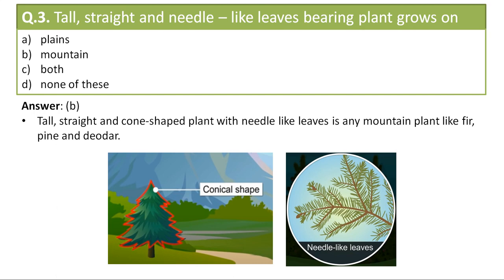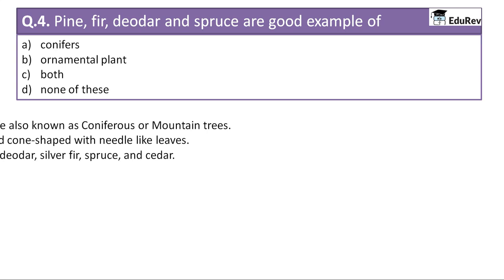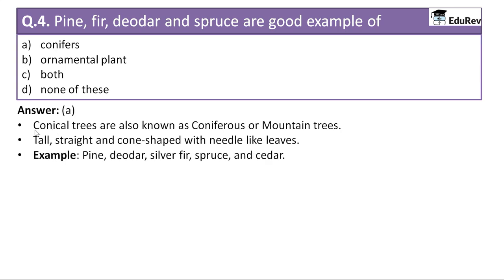The next question is: pine, fir, deodar, and spruce are good examples of — conifers, ornamental plants, both, or none of these. The correct answer is option A — conifers. Conical trees are also known as conifers or mountain trees and they are tall, straight, and cone-shaped with needle-like leaves.